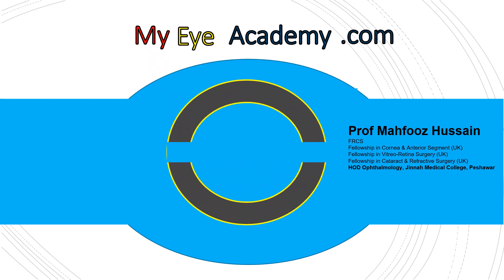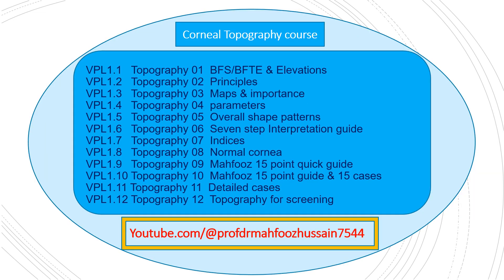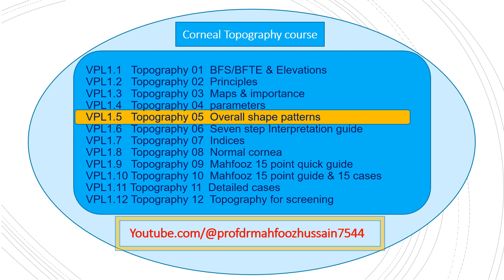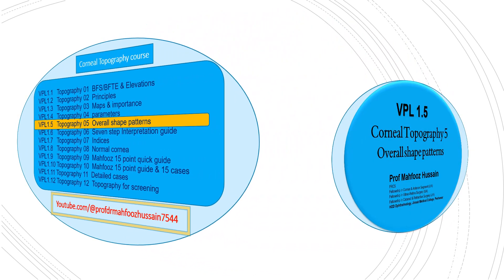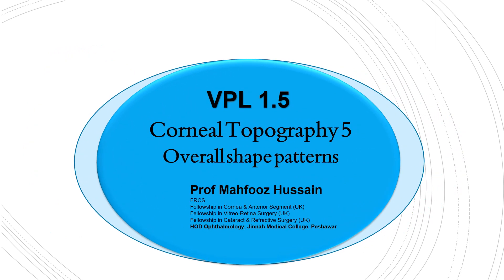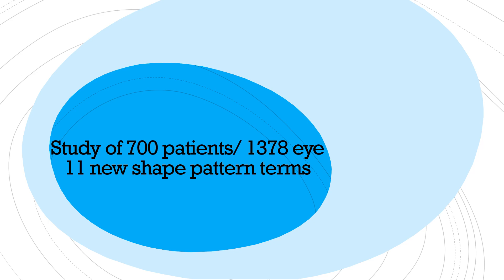Welcome to myiacademy.com. I'm Professor Mahfouz Hussain from Pakistan. This is the fifth of 12 lectures on corneal topography. Do subscribe to the channel to see the upcoming videos. In this lecture, we will discuss the overall shape patterns on corneal topography. This lecture is the result of a study in which 1,378 eyes of 700 patients were studied, and 11 new shape patterns were identified which helped to differentiate between normal and abnormal corneas.